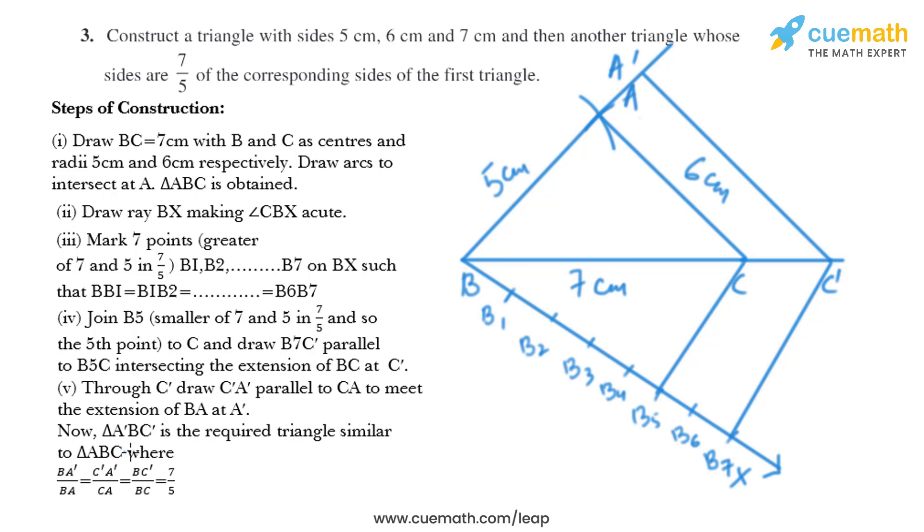So we have got triangle A dash B C dash as the required similar triangle to triangle ABC.